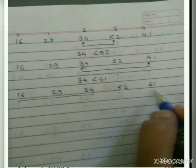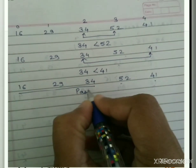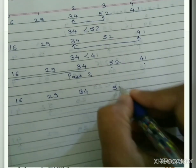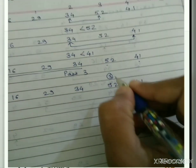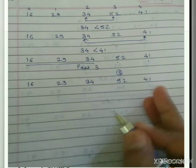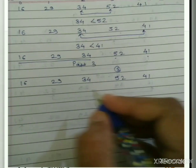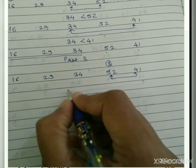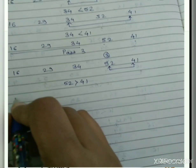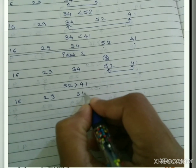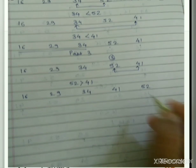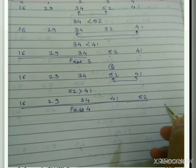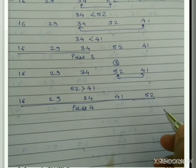For Pass 4, elements are 16, 29, 34, 52, 41. We compare the element at position 3 with position 4: 52 compared with 41. Since 52 is greater than 41, we exchange them — 41 goes to position 3 and 52 to position 4. After Pass 4, all elements are sorted in ascending order: 16, 29, 34, 41, 52 — sorted using selection sort.